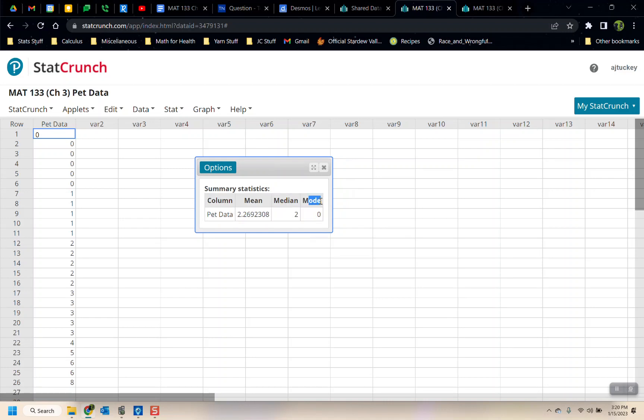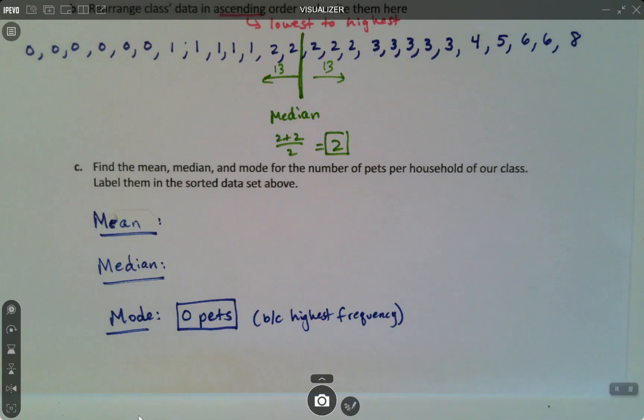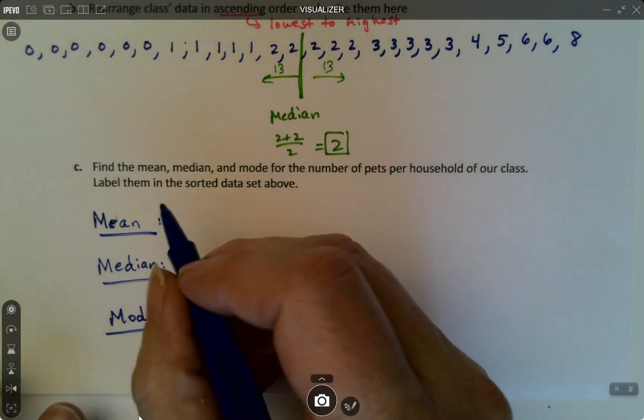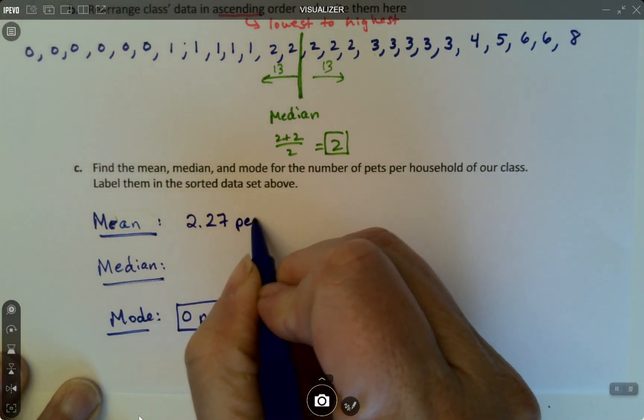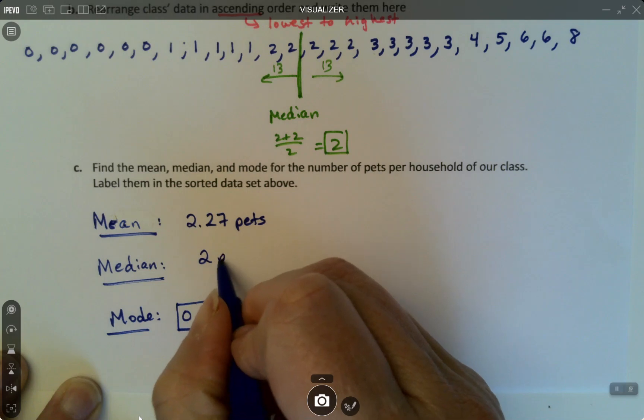And there you have it. And you can see the mode is what we said it was. It's zero. The median is two, just like we said. And the mean is 2.27 pets. All right. So let's say that. So this is 2.27 pets. This was two pets.